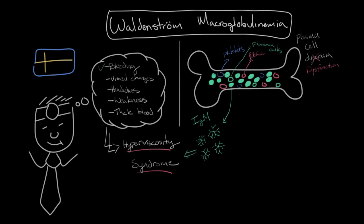Such as the bleeding, visual changes, headaches, weakness, and definitely this thickening of the blood. So now we have a general understanding of the pathophysiology of Waldenstrom macroglobulinemia and that it's a cancer of these plasma cell precursor cells that produce large amounts of IgM resulting in this hyperviscosity syndrome.